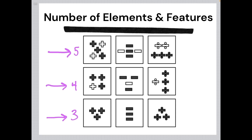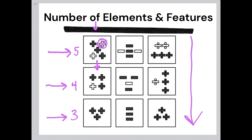From top to bottom in each column we are removing one of the white shapes. In the left column, between the first and second element we get rid of the top right white element, and then we get rid of the other remaining white element between the second and third. The same is true of column two and column three: eliminate the one on the right, then eliminate the one on the left.